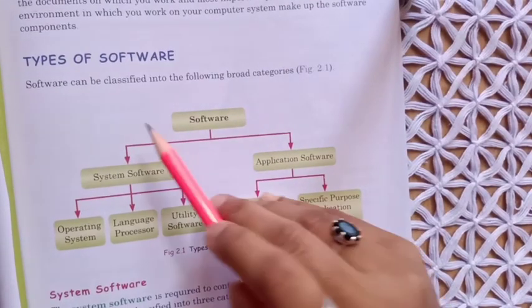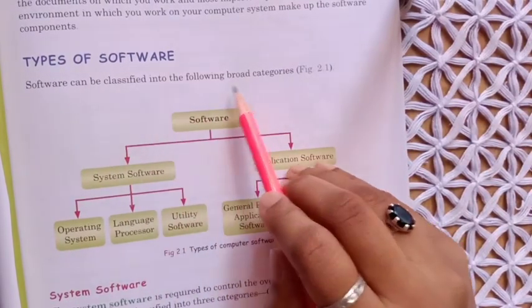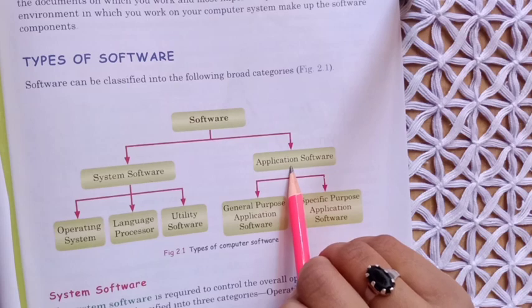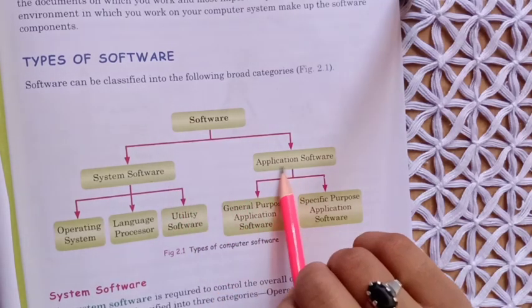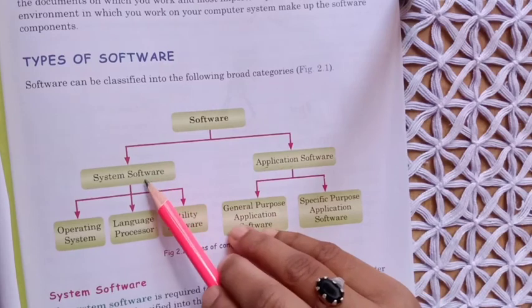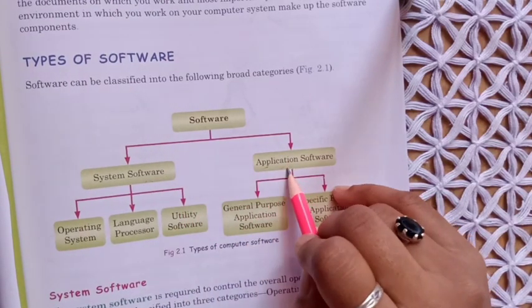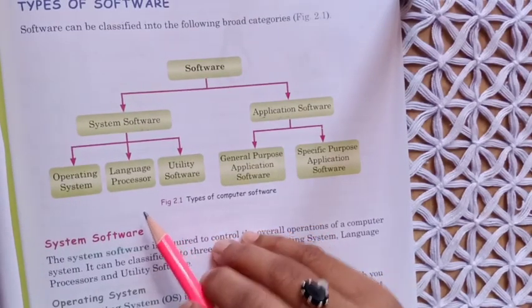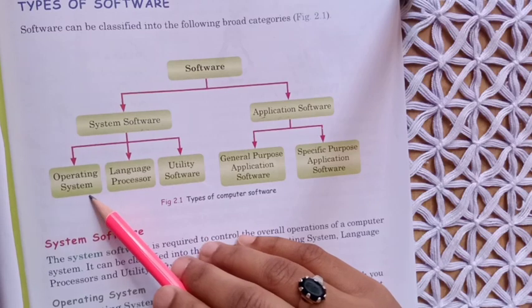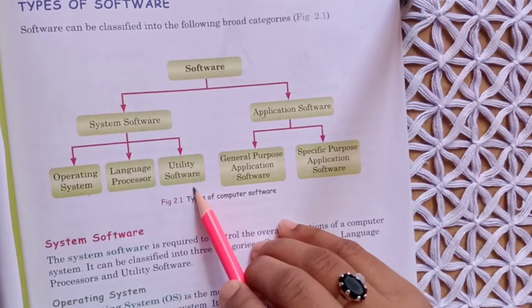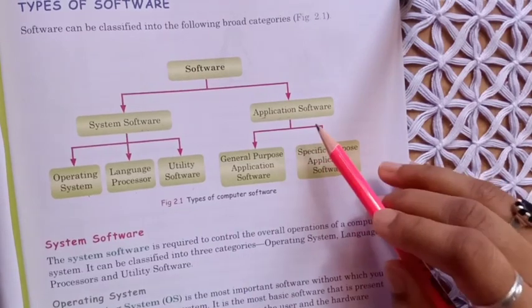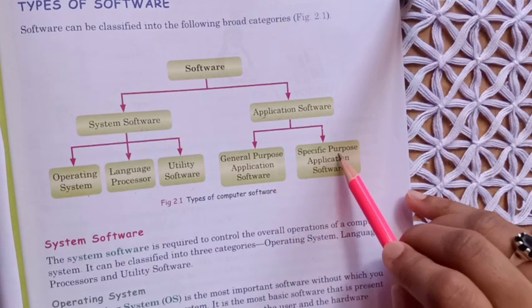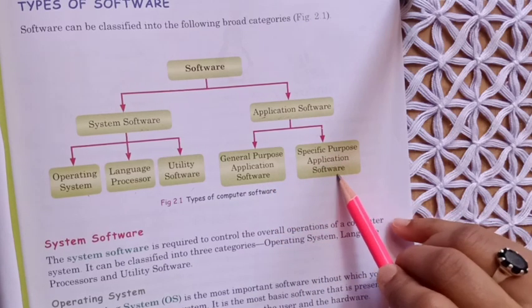Software can be classified into the following broad categories: system software and application software. These are the two main types. System software is further divided into three parts: operating system, language processor, and utility software. Application software is further divided into general purpose application software and specific purpose application software.